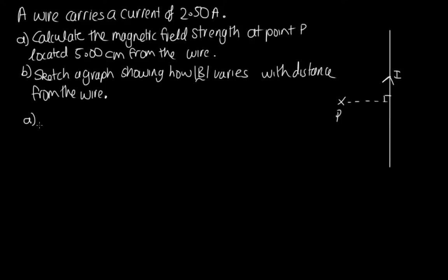OK. So for part A, we're going to need to use the formula B is equal to μ₀I over 2πr. We just need to substitute in here. μ₀ is equal to 4π times 10 to the minus 7. I, that's the current in the wire, we're told it's 2.50 amps. Then we've got 2π and r, that's the distance from the wire. And we're told that point P is 5 centimeters from the wire. So this is 0.0500 meters.